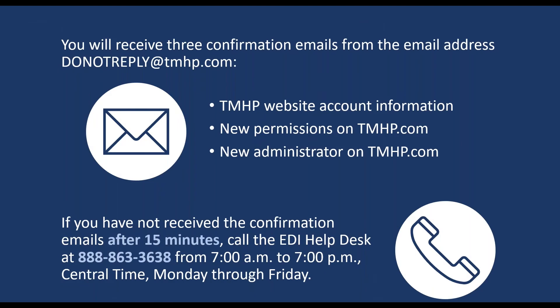You will get three confirmation emails. Read the three emails before you move to the next steps. The TMHP website account information email lets you know that your account was successfully created, and your username is included in this email. The new permissions on TMHP.com email tells you what your permission level is and its description. The new administrator on TMHP.com email tells you that you are the new administrator for the account, and your contact information is included in this email.